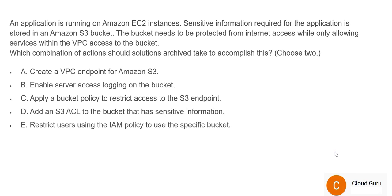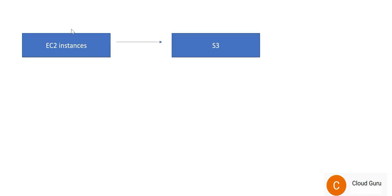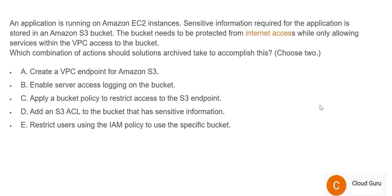Let's see question number 58. You can pause the video here to read it carefully. There is an application on EC2 instances that writes sensitive information to S3 buckets. The question asks you to secure the S3 bucket so that nobody from the internet can access it — the pain point is preventing internet access. There are five options and you have to choose two answers. The first option is to create a VPC endpoint for S3. This looks correct — if you want to protect it from the internet, you create a VPC endpoint.